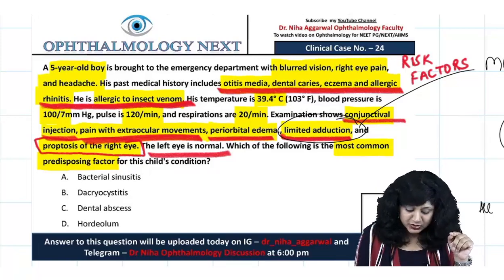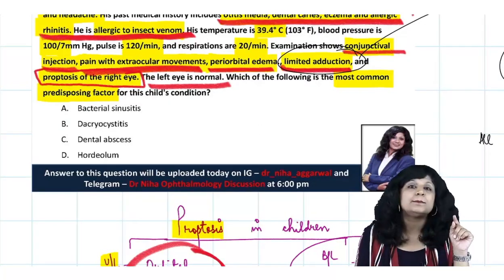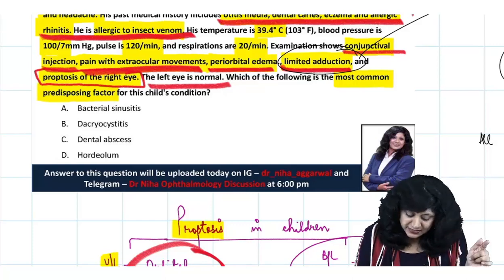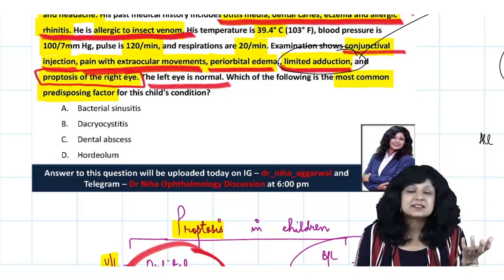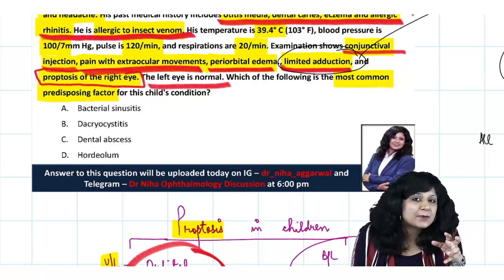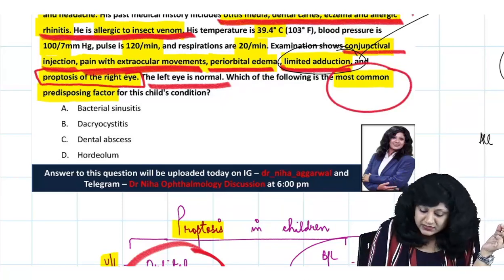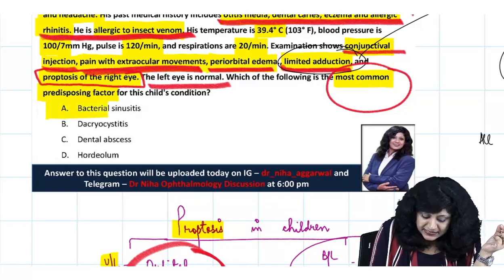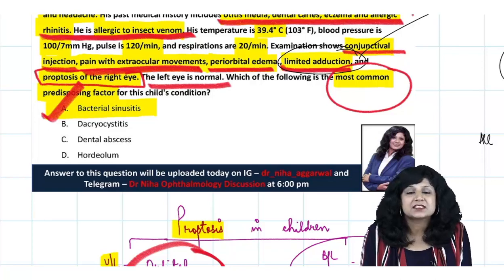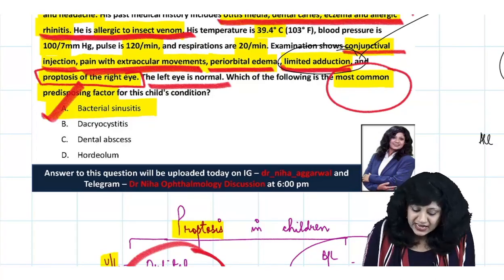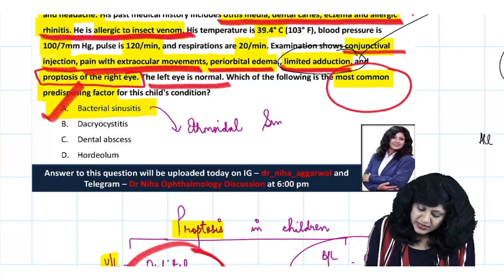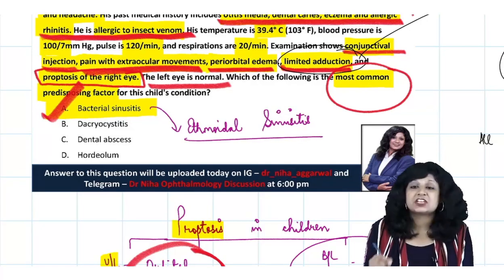Looking at the options, they are asking which is the most common predisposing factor. All four options - bacterial sinusitis, dacryocystitis, dental abscess, and hordeolum - are actually predisposing factors of orbital cellulitis. If there is infection in the surrounding area it can enter the orbital space. But which is most common? The answer is bacterial sinusitis. It is bacterial sinusitis - specifically ethmoidal sinusitis - which is the most common predisposing factor leading to orbital cellulitis.